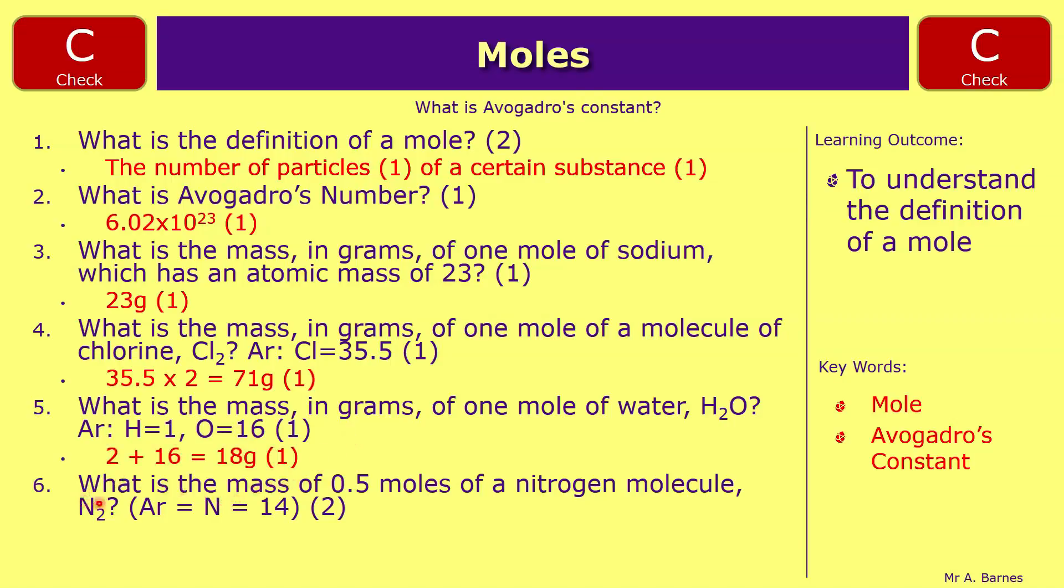And then finally, the trickier one: what is the mass of 0.5 moles of a nitrogen molecule N2? So start off working it out. N2, that's two times 14, so that's 28. It would be 28 grams if it was one mole, but it's half a mole, so you times that by 0.5 or divide by 2, which gives you 14 grams overall. So you get one mark for 14 times by 2, and one mark for multiplying that by 0.5.